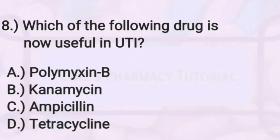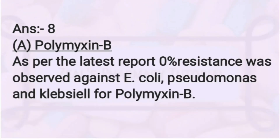The last question, question eight: which of the following drugs is most useful in UTI — Polymyxin B, Kanamycin, ampicillin, or tetracycline? The correct answer is Polymyxin B. As per the latest report, 0% resistance was observed against E. coli, Pseudomonas, and Klebsiella for Polymyxin B.